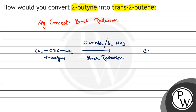So we have C double bond C — we will have H on this side, we will have H on this side, we will have CH3 on this side, and CH3 on that side. So this is trans-2-butene. Okay, this is how we solve this question.